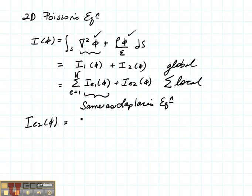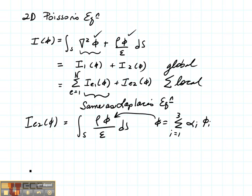So IE2 is going to be the integral over the surface of rho times the potential over epsilon. Remember that the potential can be written as the sum of the shape functions times the potentials at the nodes, and I goes from 1 to the number of nodes which is 3 in the case of a triangle. Let's substitute this in here.